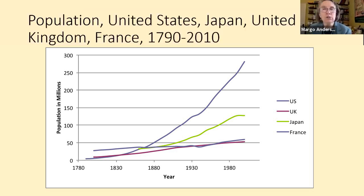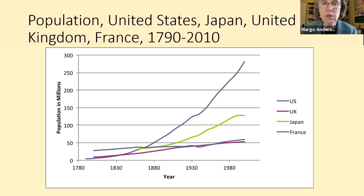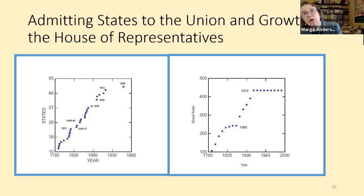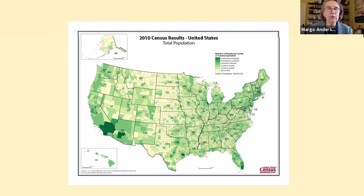Comparing the US to other countries: in the 18th century the US population was smaller than Britain and France, but by the mid-19th century it had overtaken its former European nations. Even Japan, which was a rapidly growing country, has plateaued, whereas the US keeps growing. The house size has gone from 65 to 435, with a flat line after 1910. Here are the 2010 census results, showing the number of people per county — the darker the green, the more populous the area.